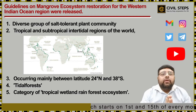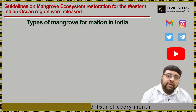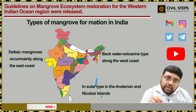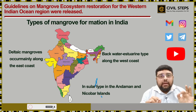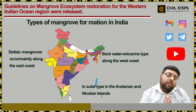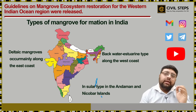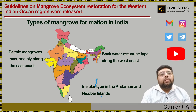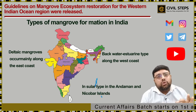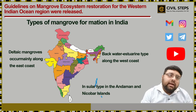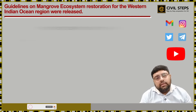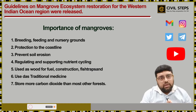If you see the types of mangrove formation in India, there are three types. Number one is deltaic mangrove, which occurs mainly along the east coast. Second is backwater estuarine type, which occurs along the west coast. Third is insular type, which occurs in the Andaman and Nicobar Islands.